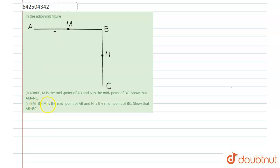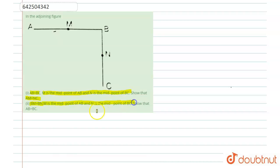Similarly, BM is equal to BN. M is the midpoint of AB and N is the midpoint of BC, so that AB is equal to BC. So, we are given that AB is equal to BC, M is the midpoint of AB, and N is the midpoint of BC, and we have to show that AM is equal to NC. Similarly, BM is equal to BN is given, and we have to show that AB is equal to BC.